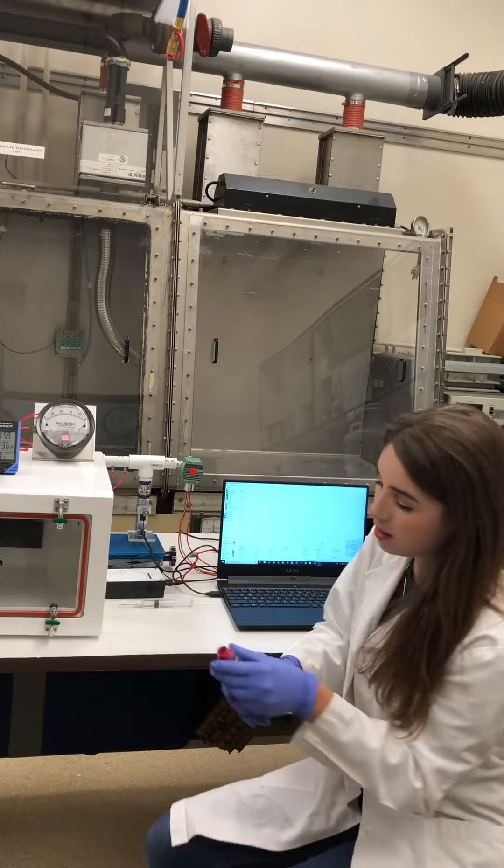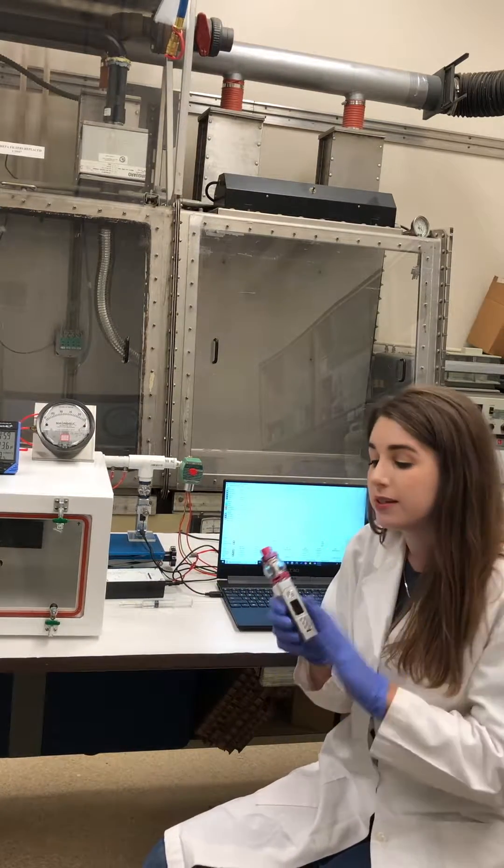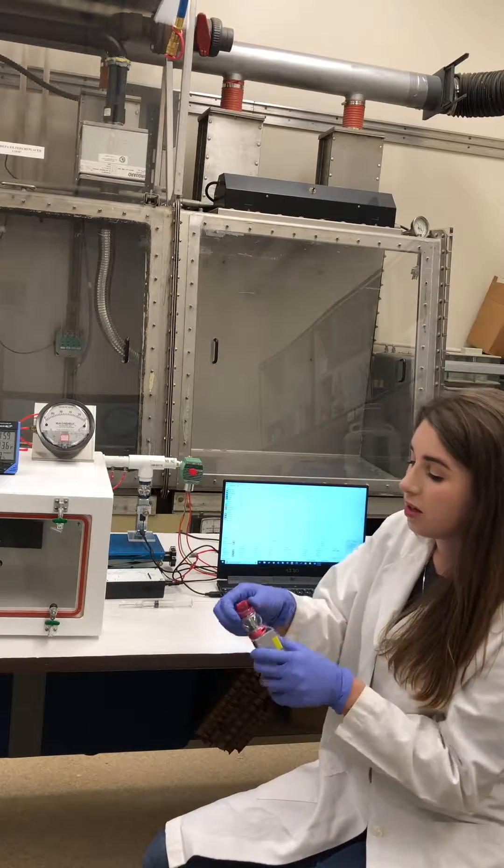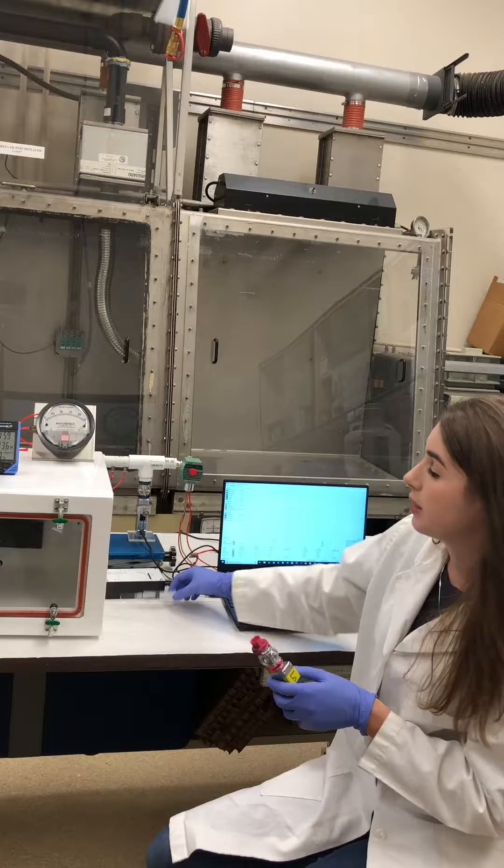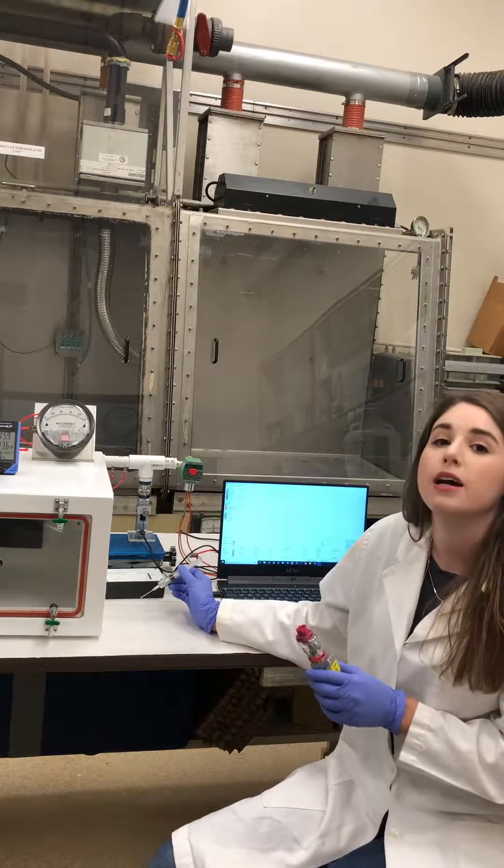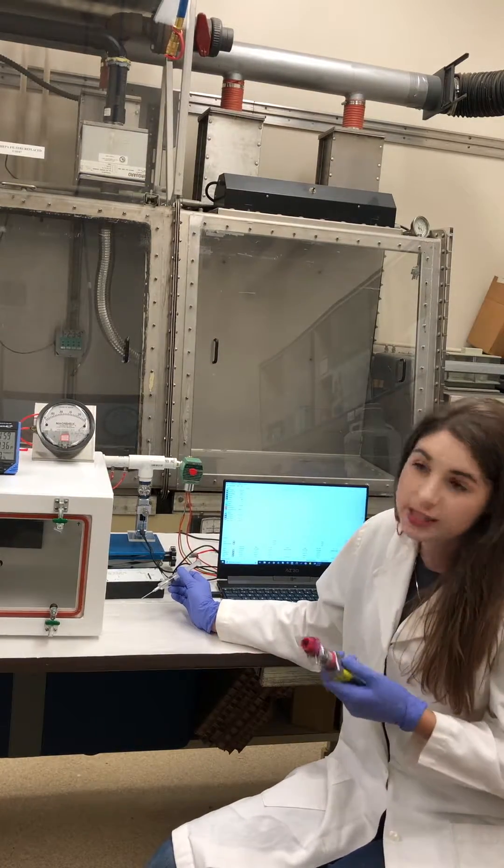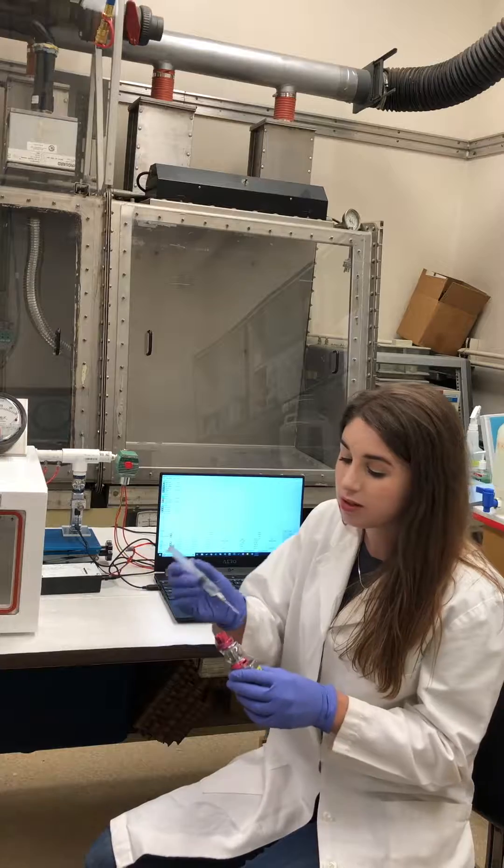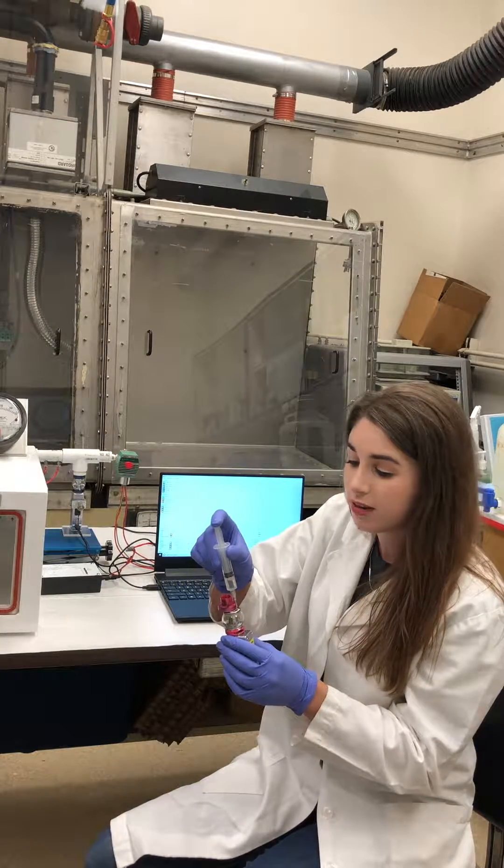So we have an e-cigarette device. It has a battery and then a tank where you put the e-liquid. We make our own e-liquid out of propylene glycol and vegetable glycerin, the same as you would purchase in a vape store. Then we add nicotine and we can add different flavoring chemicals. We just add that directly into the device.